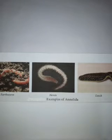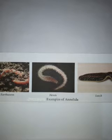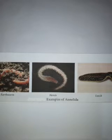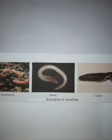The first diagram shows Lampito mauritii, the earthworm, which we have seen in the garden. Next is Nereis, which has lateral appendages — it is aquatic.